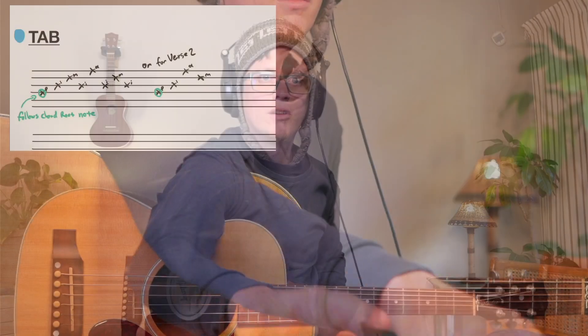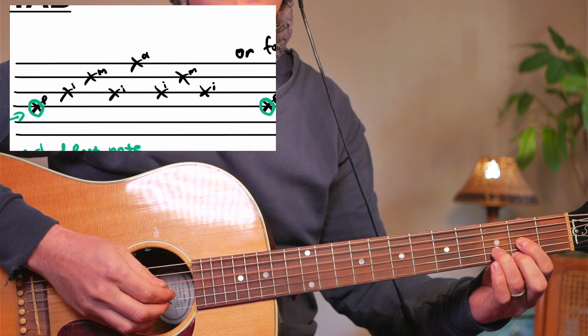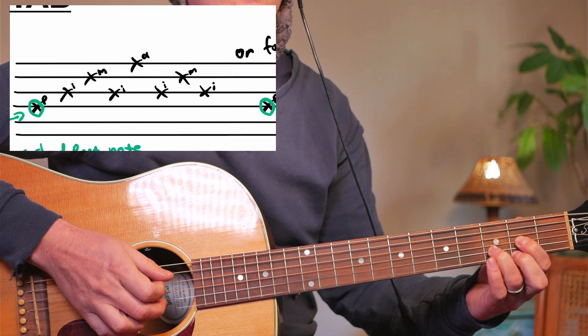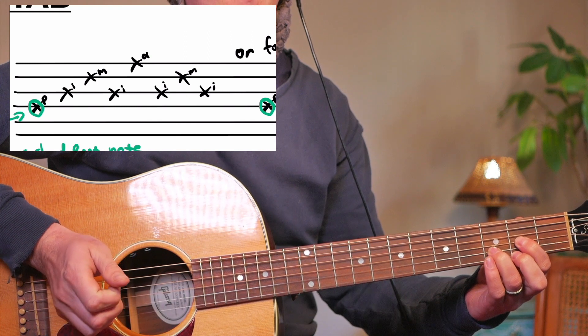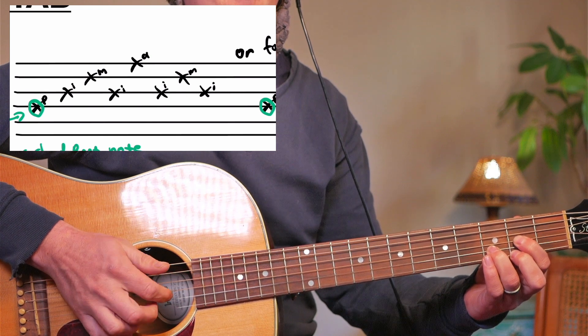So basically the picking pattern that you want to use is this one over here that I used in my easy tutorial for the song. So it goes like, P, I, M, I, A, I, M, I.